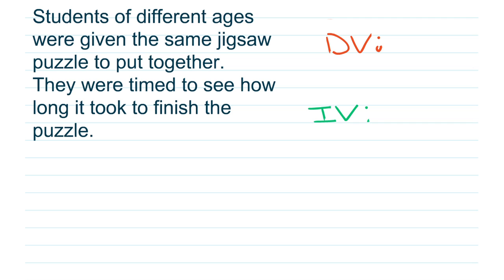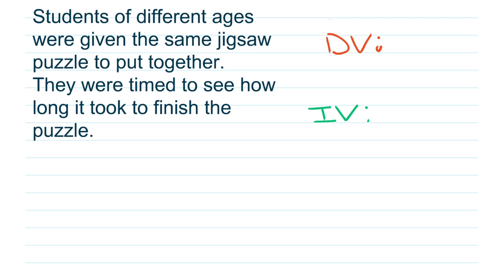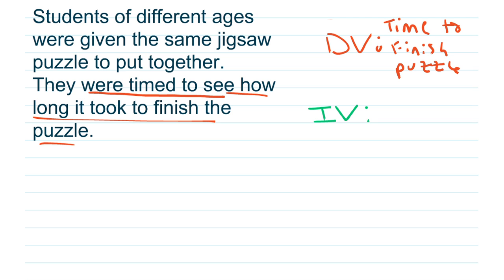We have to ask ourselves: what's being measured here? For this situation, there are really only two different things — either measuring the different ages, or measuring the time it took to solve the puzzle. In this situation, the dependent variable — what he's measuring — is the time it took to finish the puzzle. So that's our dependent variable.